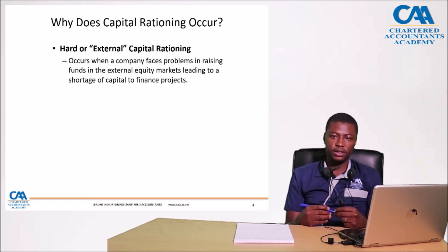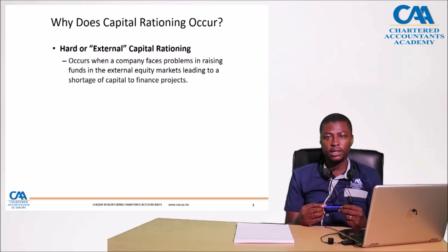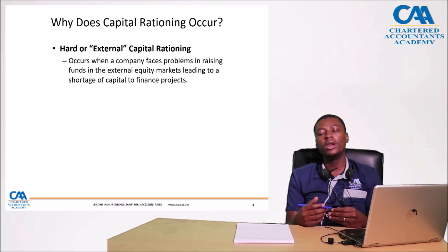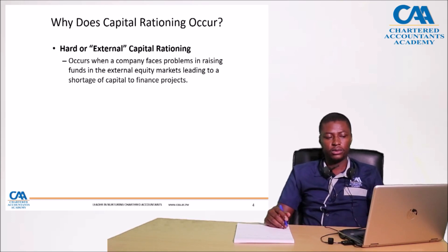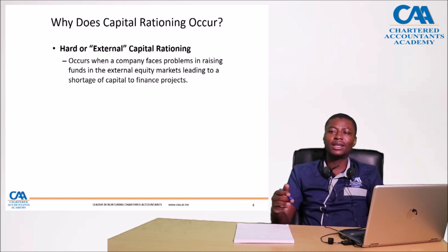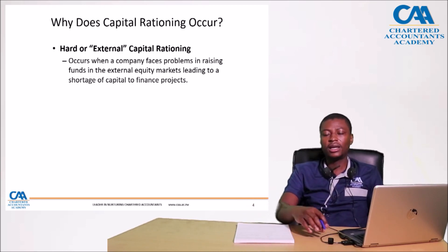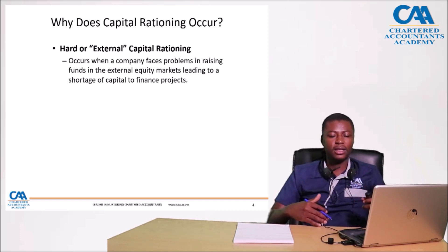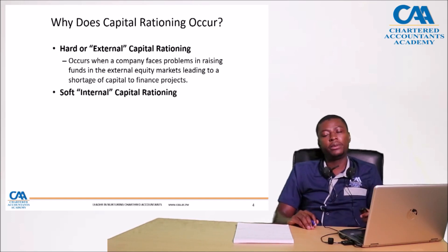Or if you look at a startup entity — for most startups, it is very difficult to raise capital, be it in the form of debt or equity, because of their track record. Providers of finance are less willing to give capital to these startups. Or there can be some debt covenants that say a capital-to-debt ratio should not exceed a certain threshold. So that debt covenant can give rise to capital rationing. There can be a number of things that give rise to hard capital rationing.